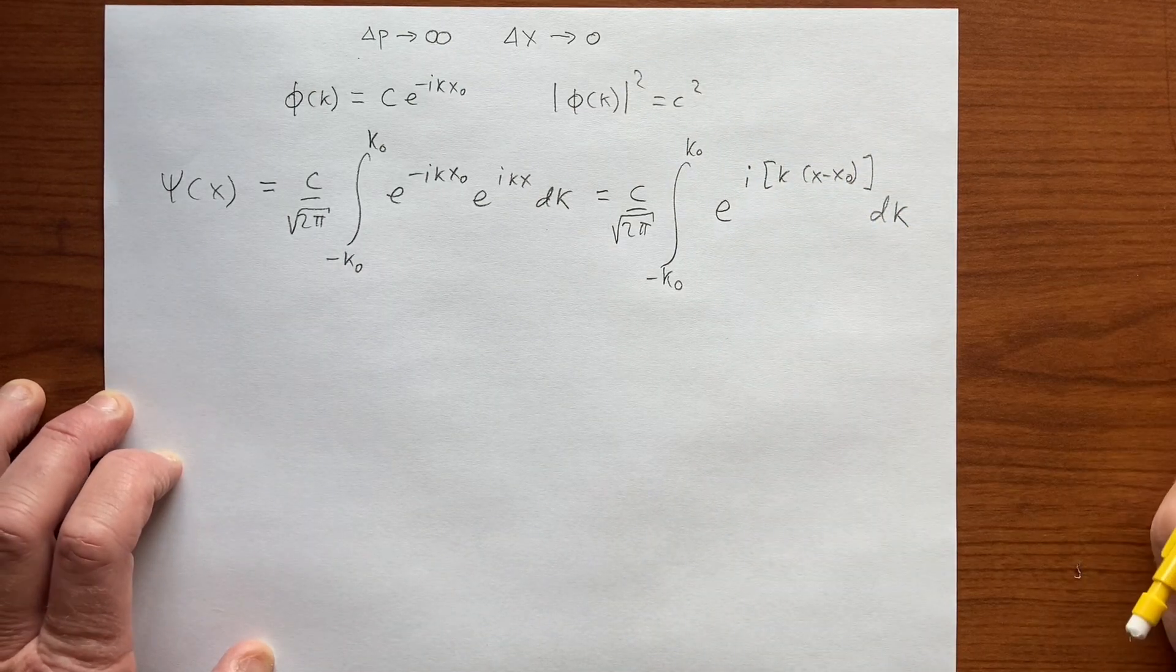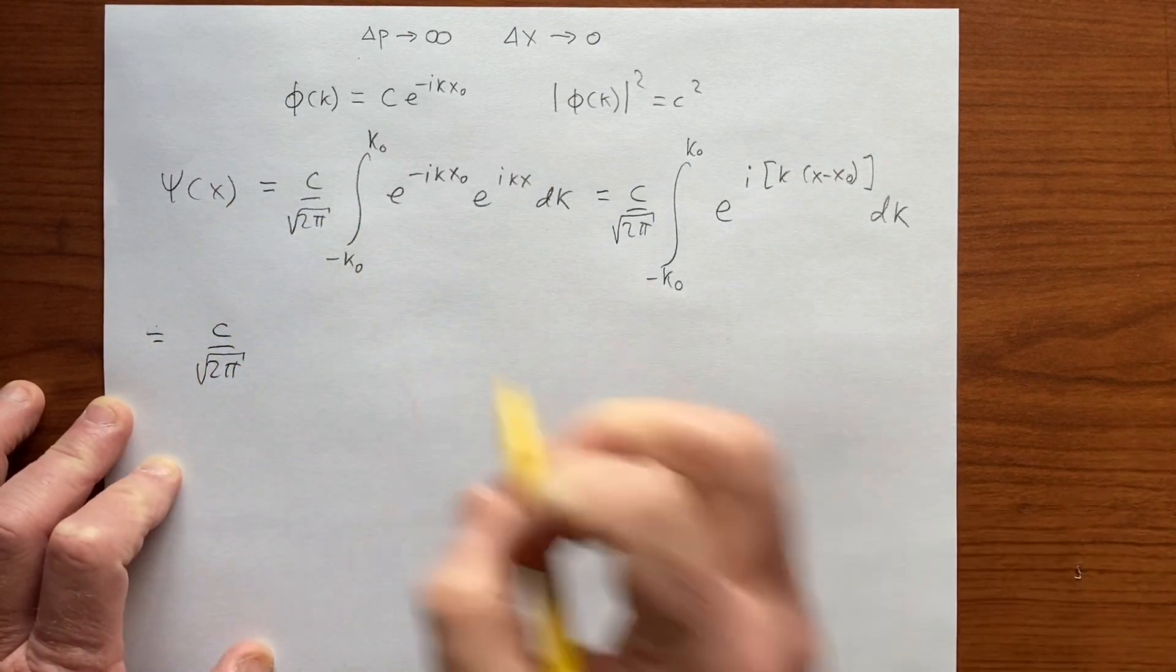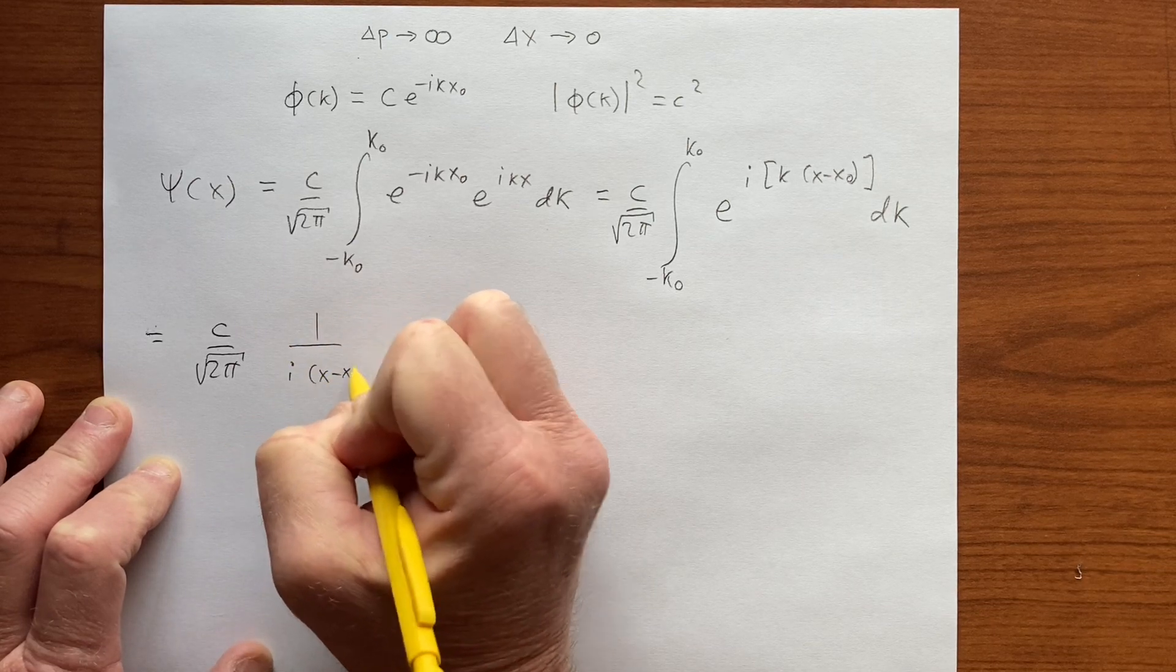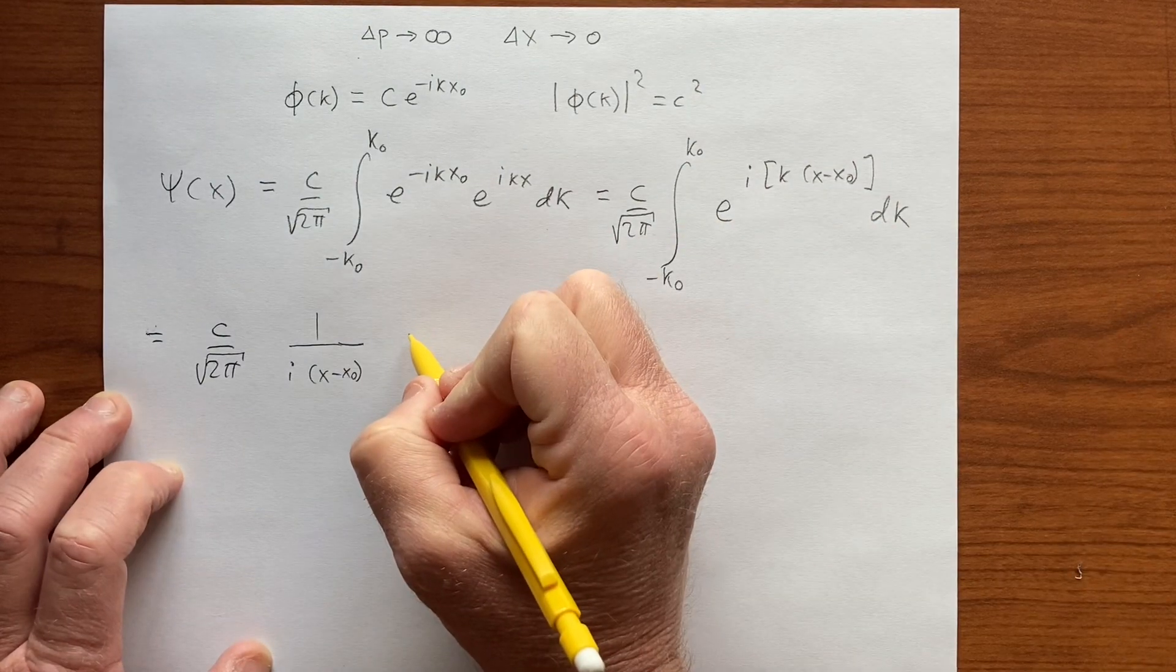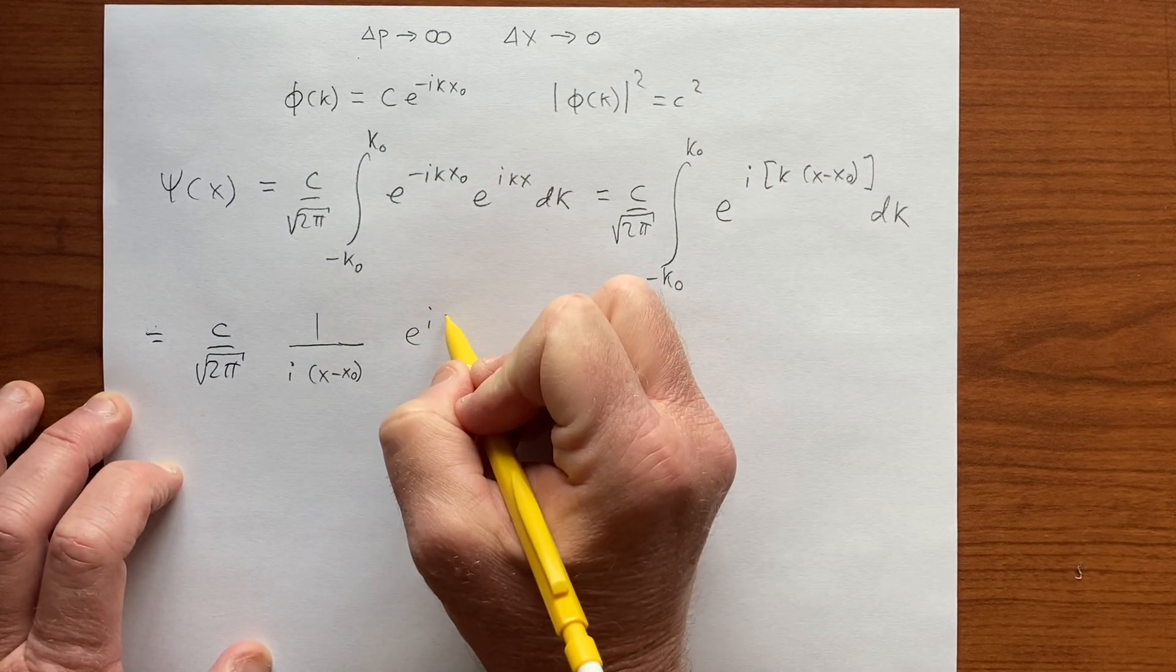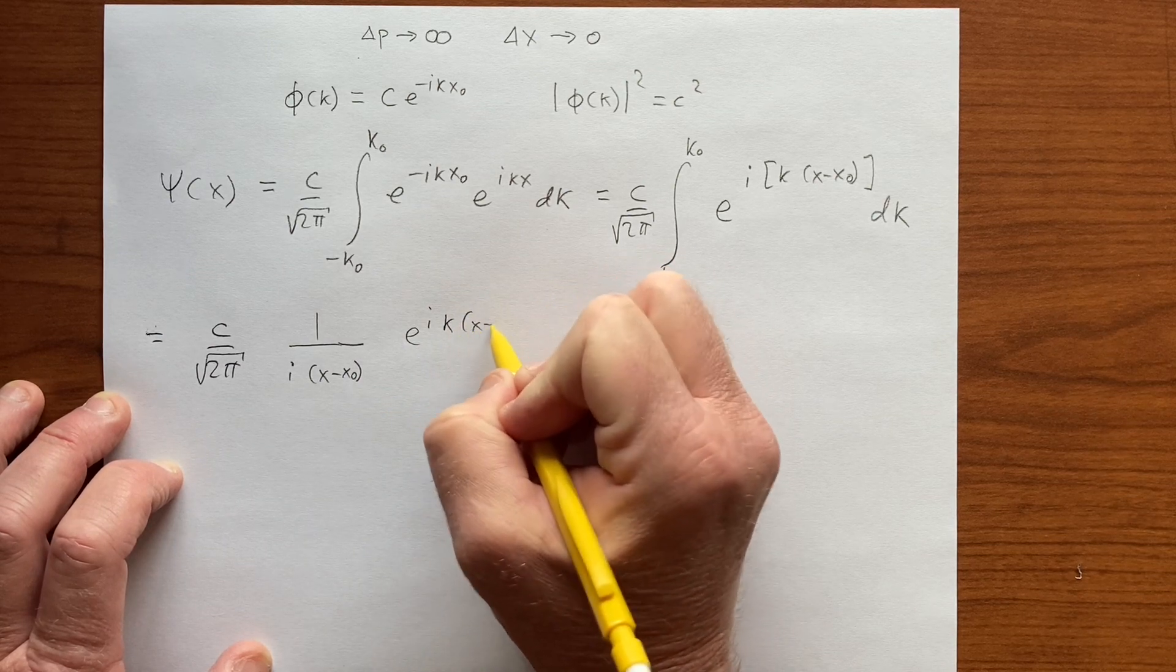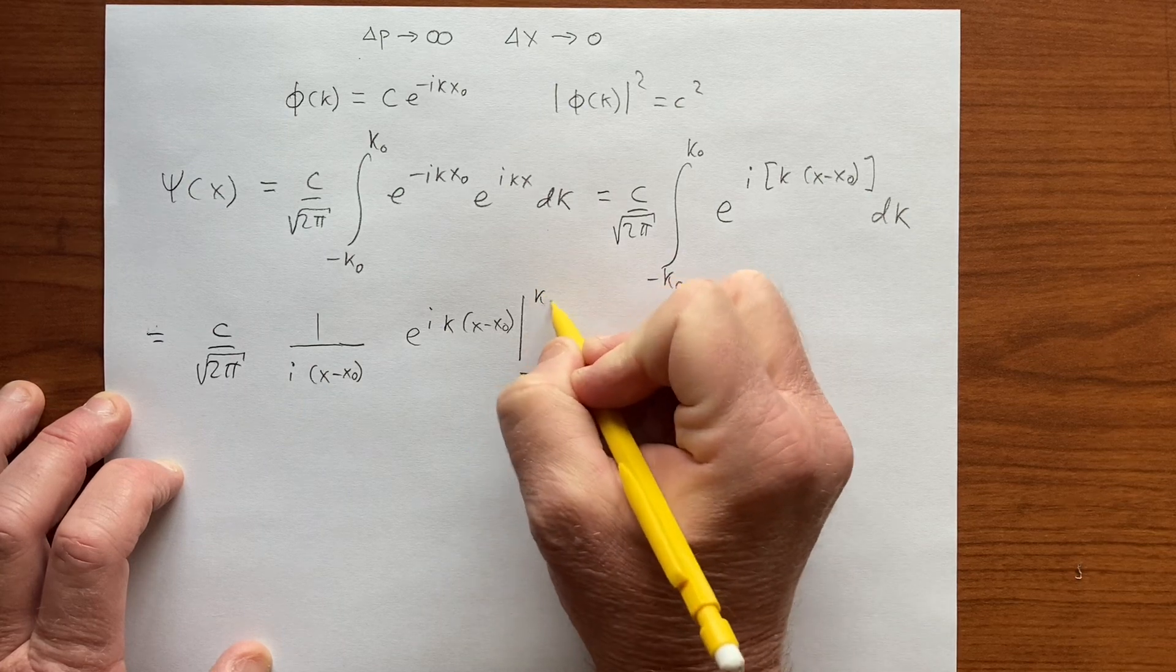This equals c over square root of 2π times 1 over i(x minus x₀), which gives us e to the i k(x minus x₀) evaluated from negative k₀ to k₀.